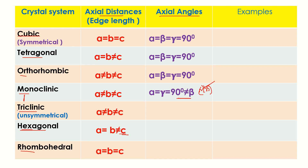For triclinic, 'tri' means three. All three axial angles are not equal to 90°. Alpha, beta, and gamma all have separate values that are less than 90 degrees.